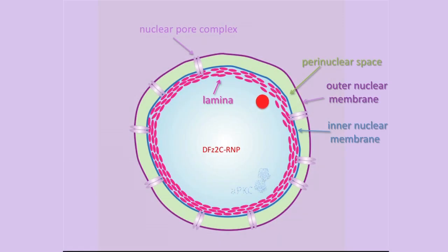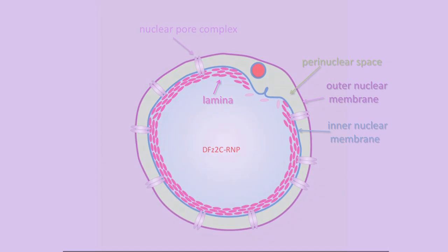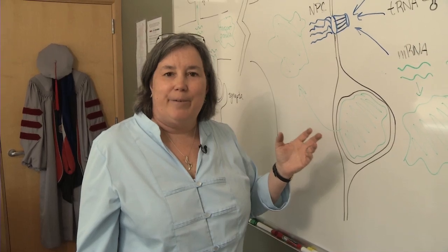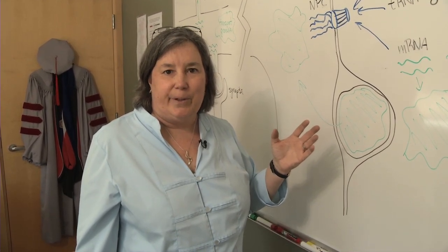Interestingly, the Frizzle 2C RNPs utilize some of the same cellular machinery as viral capsids during the nuclear budding process. Nuclear capsids initiate the nuclear budding process by recruiting viral proteins as well as cellular proteins such as protein kinase C to phosphorylate lamin, which allows them to bud into the perinuclear space. Similarly, we found that an atypical protein kinase C, likely through the phosphorylation of A-type lamin, was required for the budding process.